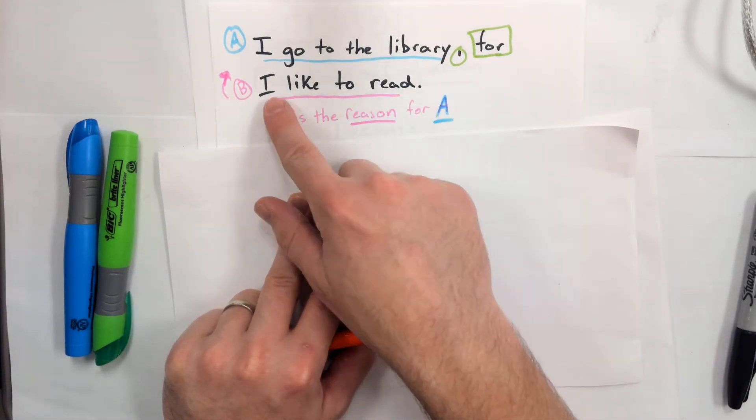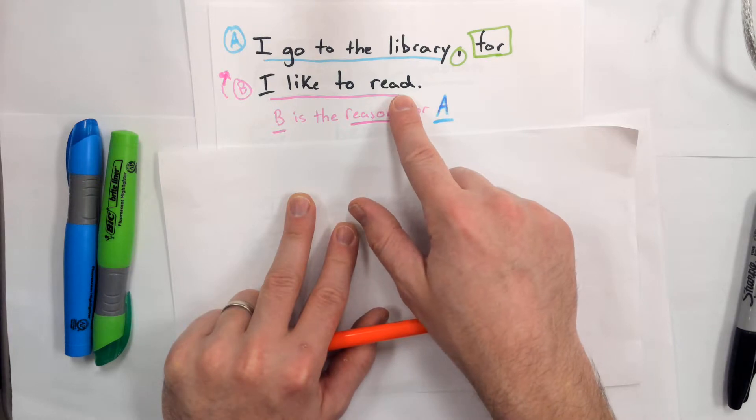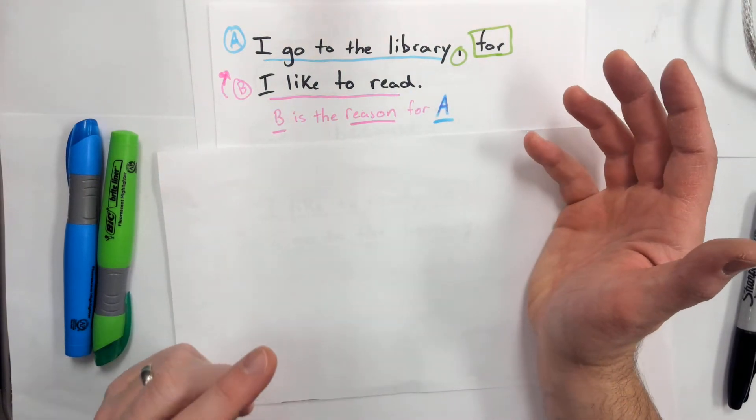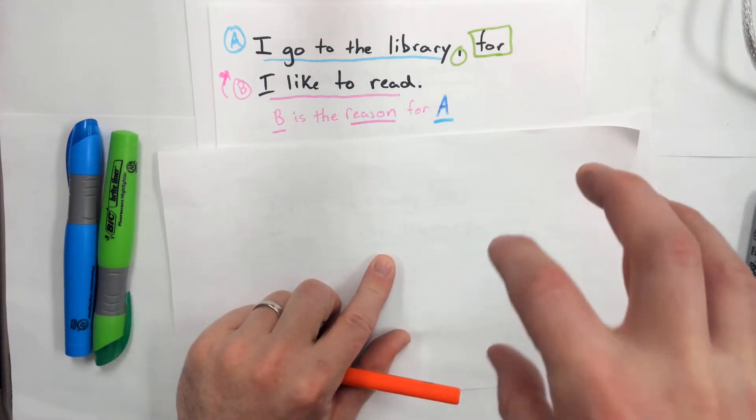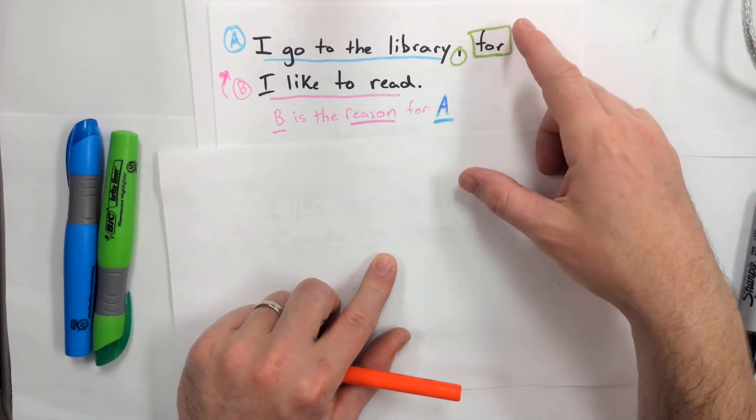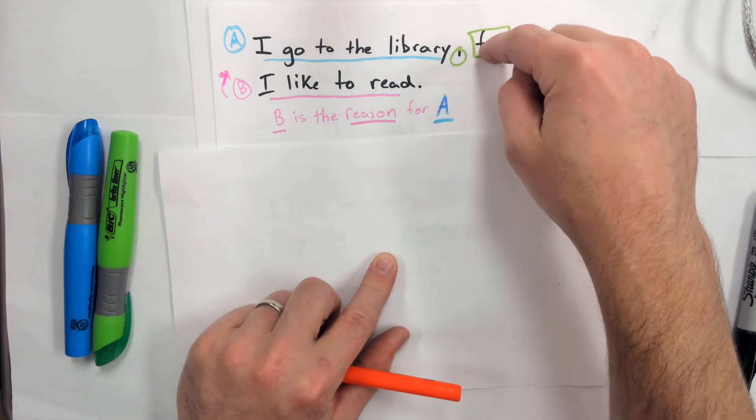It's like if I said 'I go to the library because I like to read.' I could say that sentence; it's the exact same meaning. So basically, if you can put 'because' in a sentence in the middle, you can usually use 'for' the same way, but you need that comma.